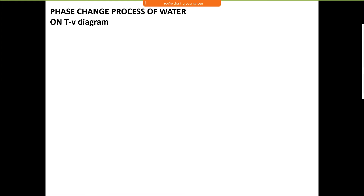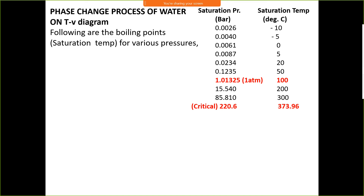Now, the phase change process of water on the T-V diagram. Saturation temperature is the temperature at which liquid starts boiling, and the corresponding pressure is called saturation pressure. At sea-level atmospheric condition, 1 atmospheric pressure equals 1.01325 bar, at which boiling temperature is 100 degree Celsius.